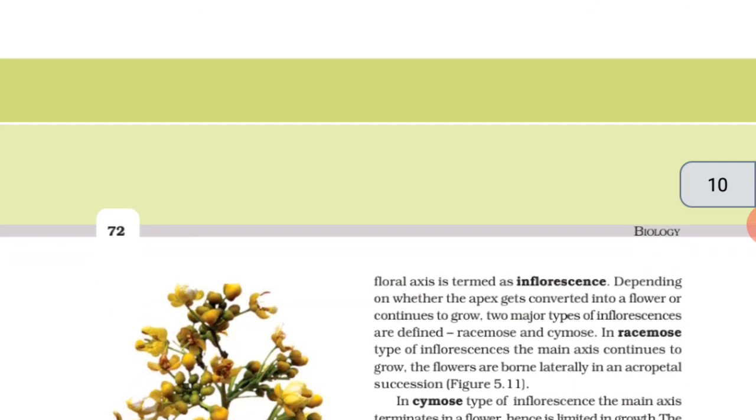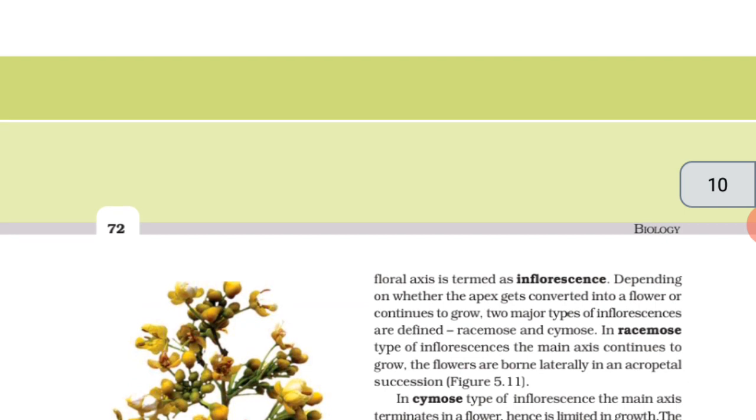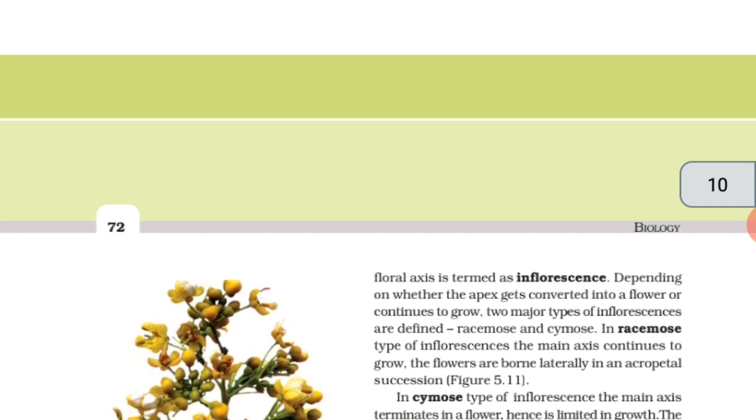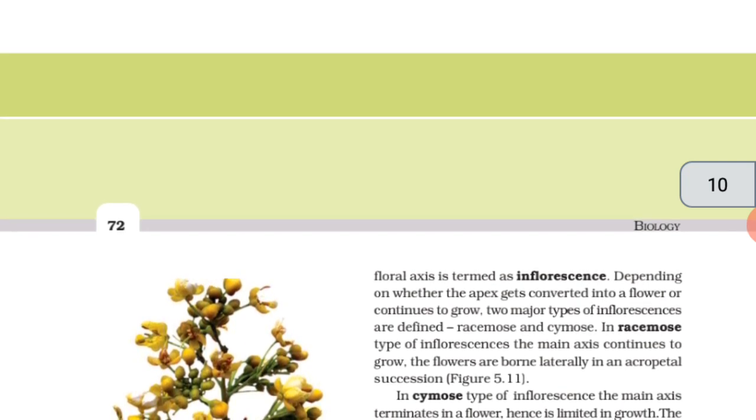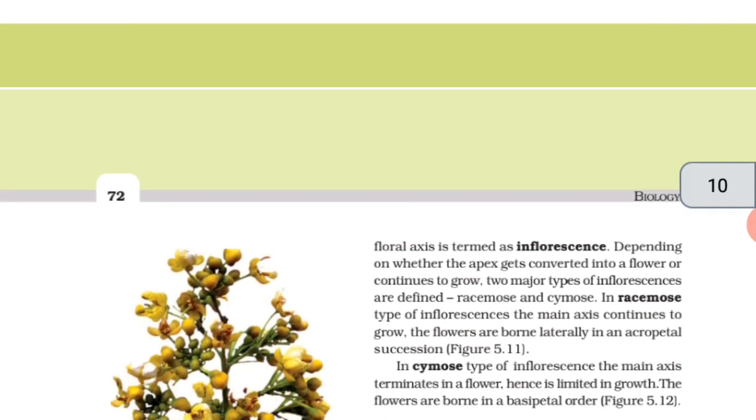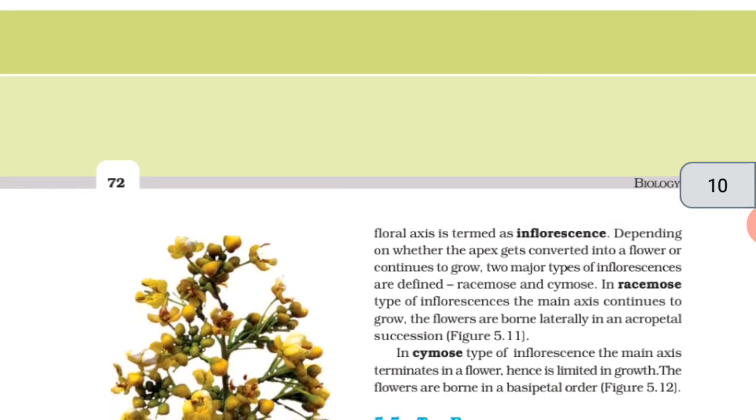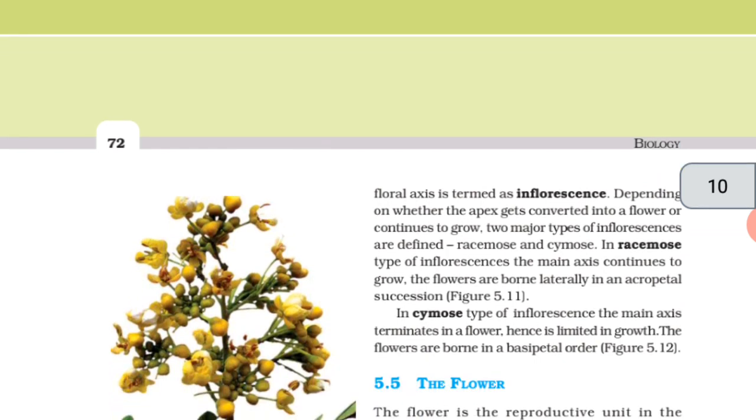Depending on whether the apex gets converted into a flower or continues to grow, two major types of inflorescence are defined: racemose and cymose. In racemose type of inflorescence, the main axis continues to grow. The flowers are born laterally in an acropetal succession. In cymose type of inflorescence, the main axis terminates in a flower, hence is limited in growth. The flowers are born in a basipetal order.